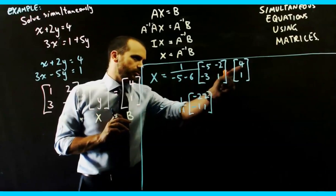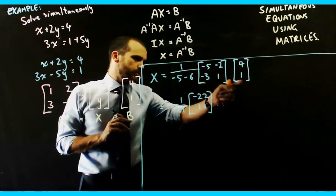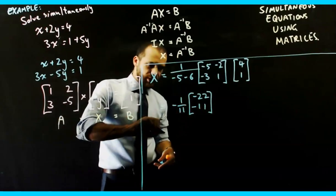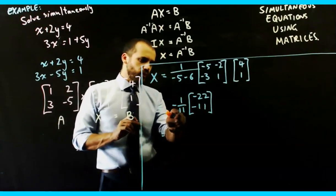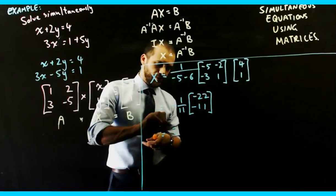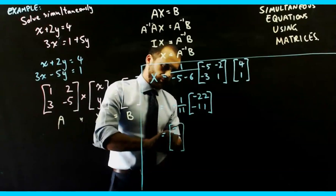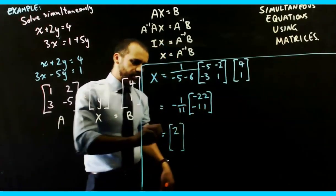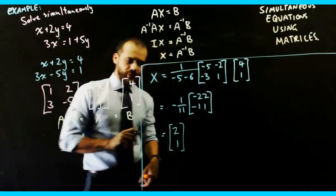And negative 3 times 4 plus 1 times 1, which is negative 11. So, now I can finish this off by saying negative 1 eleventh times negative 22 is positive 2, and negative 1 eleventh times 11 is 1.